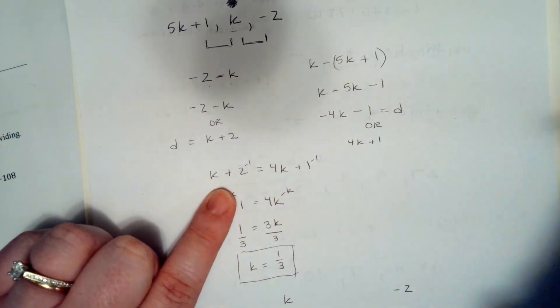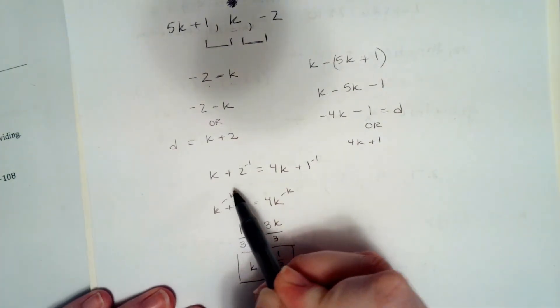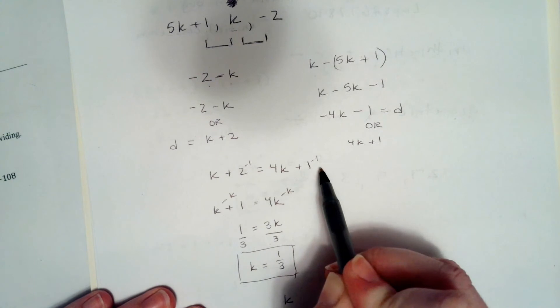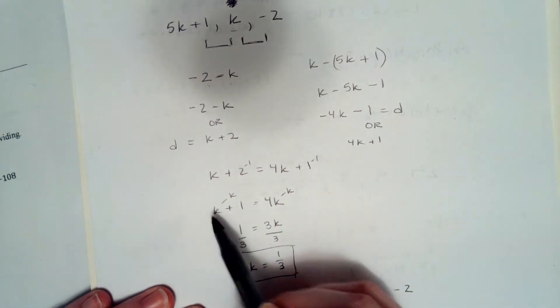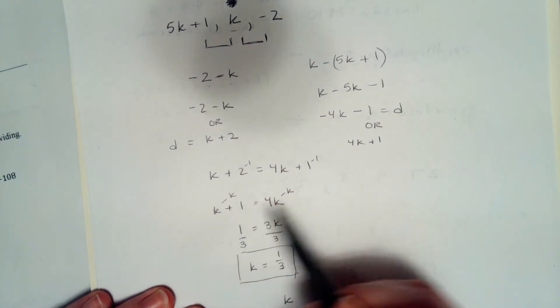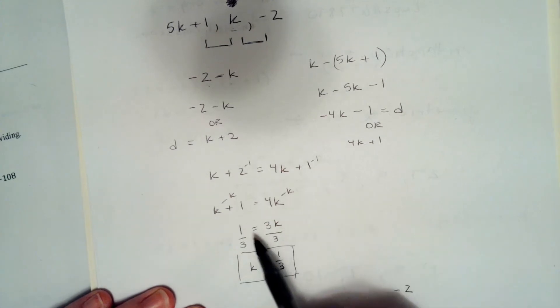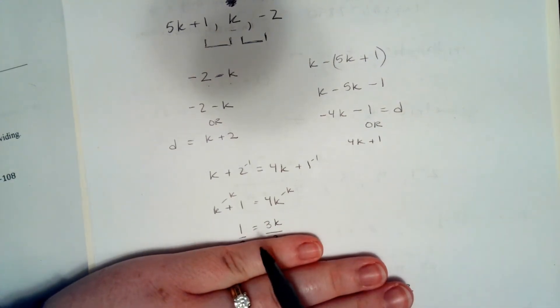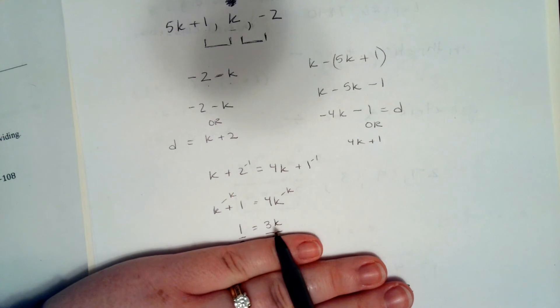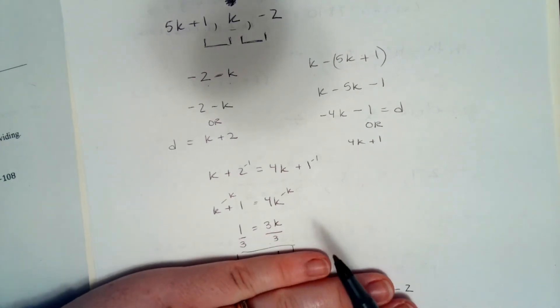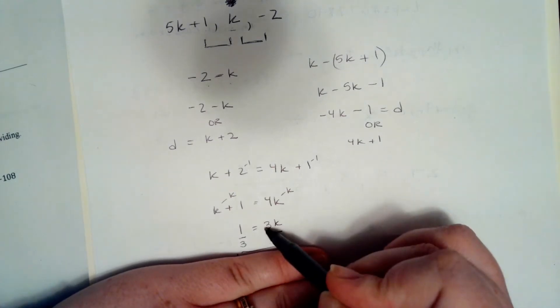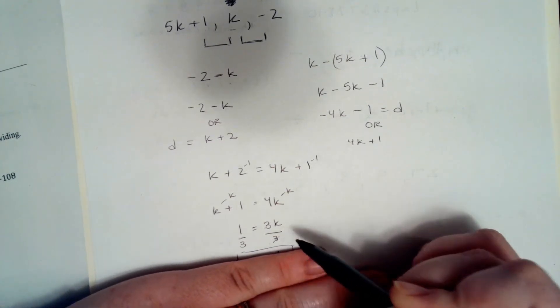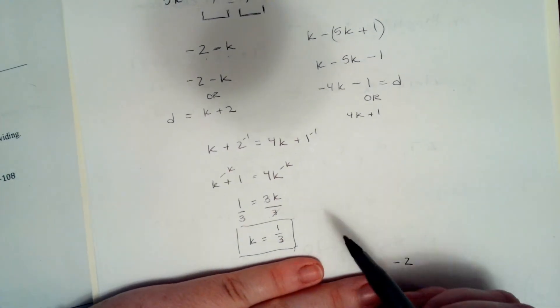So it then becomes k plus 2 equals 4k plus 1, and we solve that. Subtract 1 and then we have k plus 1 equals 4k. Now we're going to subtract k from both sides. 1 is going to be equal to 3k, so we'll need to divide by 3 to get k by itself. These 3's will cancel out and k is going to be equal to 1 third.